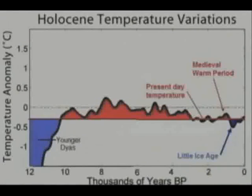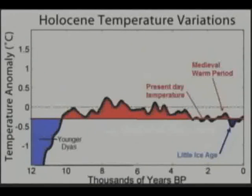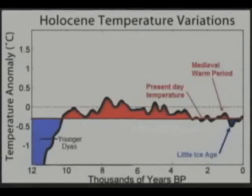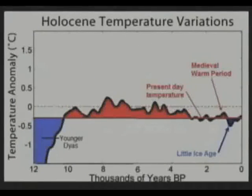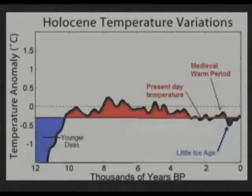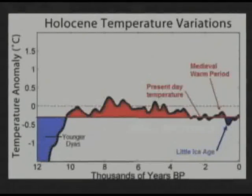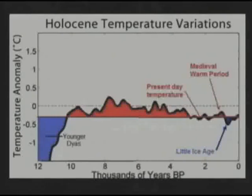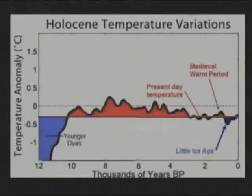During the Holocene, which is the time since the last ice age, this is the modern day temperature. Warm is up, cold is down. This is coming out of the last ice age. From 10,000 years to about 3,000 years, the temperature was actually warmer than it is right now. And then it cooled for about the past 3,000 years with some ups and downs. We'll talk about these little squiggles in a bit. Here's the Medieval Warm Period, here's the Little Ice Age, and we're right about in here. But look at most of the last 10,000 years.